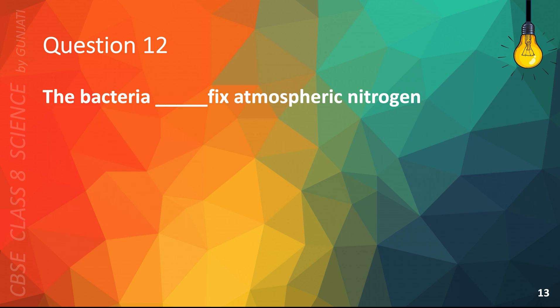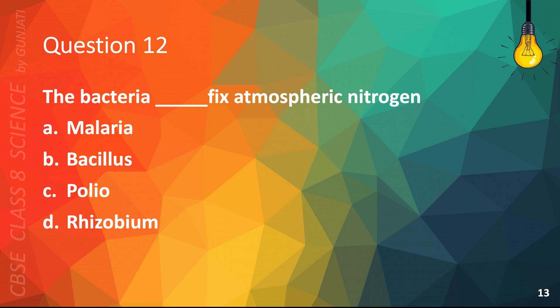Question 12. The bacteria blank fix atmospheric nitrogen: A. Malaria, B. Bacillus, C. Polio, or D. Rhizobium. The correct answer is D. Rhizobium.